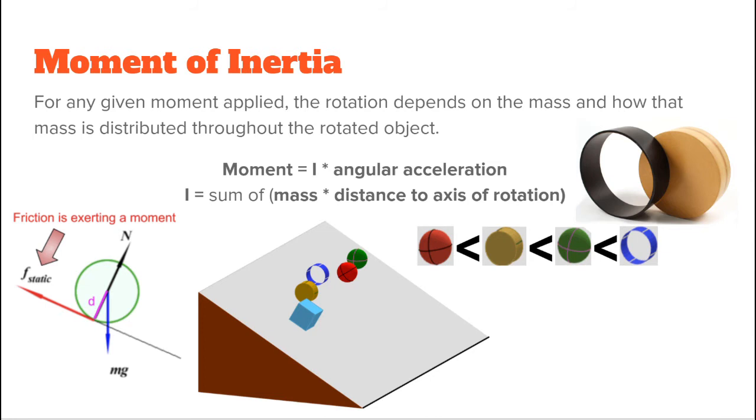This brings us to our next concept, moment of inertia. For any given moment applied to an object, the rotation that you observe will be different depending on that of the object's moment of inertia. Moment of inertia is a geometrical property that depends on how mass is distributed throughout the object. The higher the moment of inertia, the more resistant an object becomes to increases in rotation. We can see this in our next equation, moment is equal to the moment of inertia times angular acceleration. Angular acceleration is what increases our rotations. If your I is bigger, you will need a bigger moment to rotate the object.